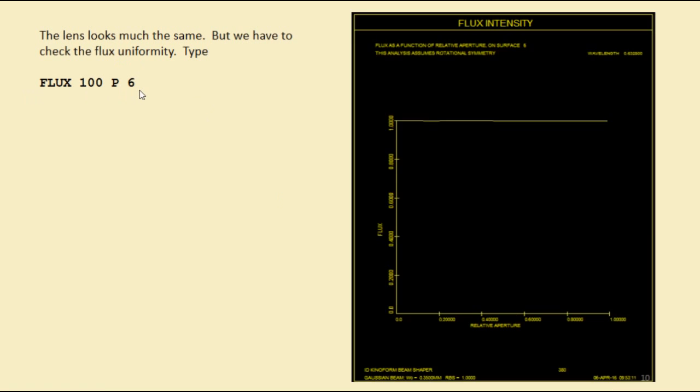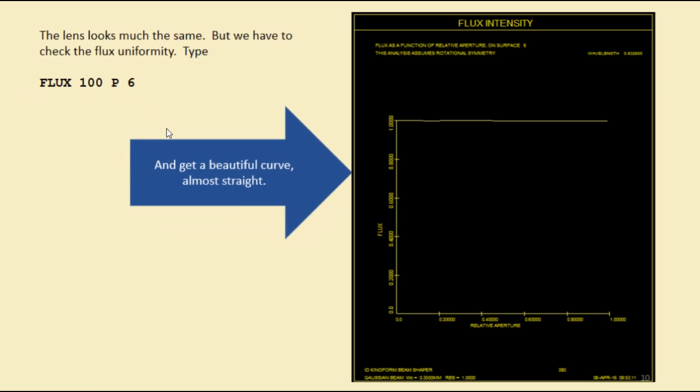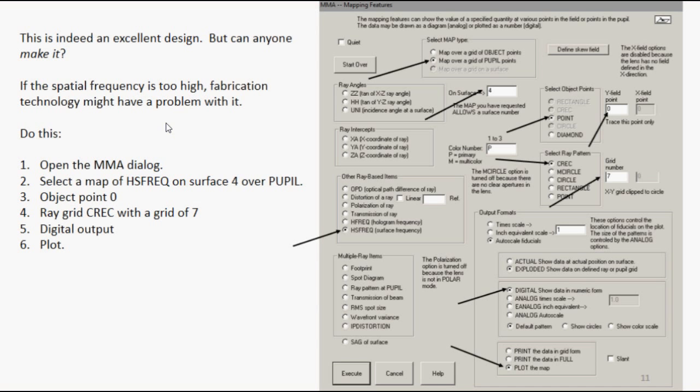Okay, but now we have to check this design. We're going to look at the flux uniformity. So we type the flux command in the command window, 100 zones on surface 6. And oh my goodness, look at that. The Gaussian profile has been turned into almost a perfectly straight line. So it's an excellent design.